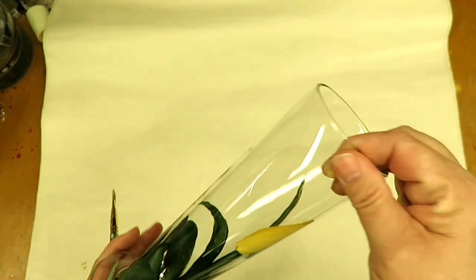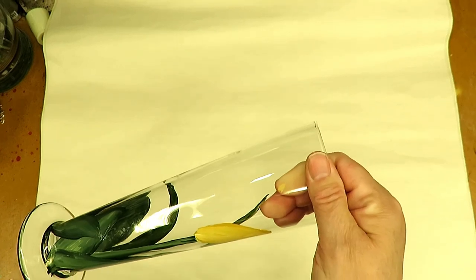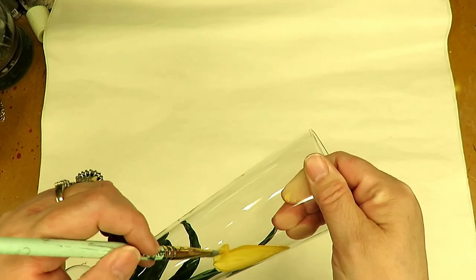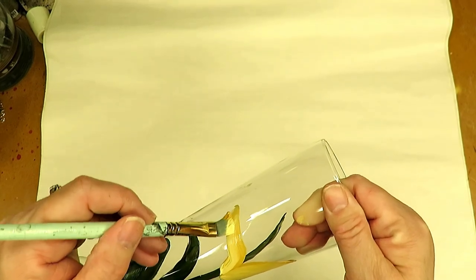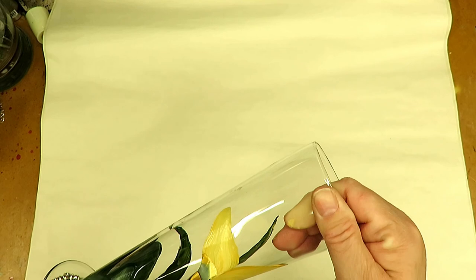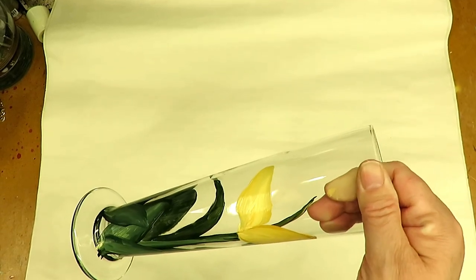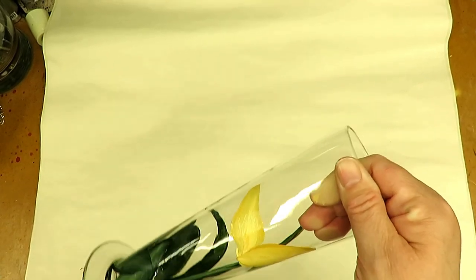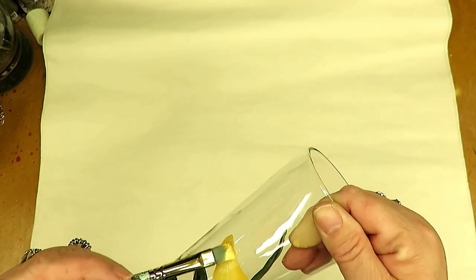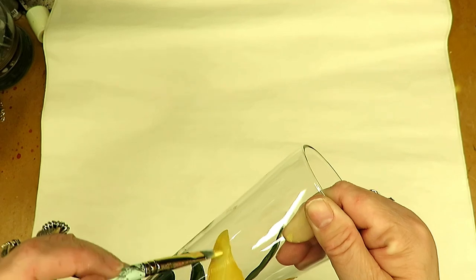Moving on to the second petal. You can wiggle your brush a little bit to maybe give it more of a wavy edge instead of a straight edge to the petal.